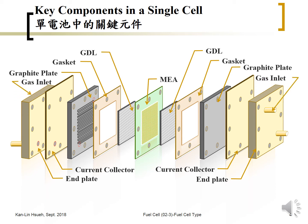The gas inlet will be from here, going in and out. The channel is on the other side of the graphite plate so we cannot see it directly, but we can see the gas inlet coming in through a hole, flowing through the channel, and then going out from the gas outlet here.